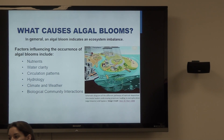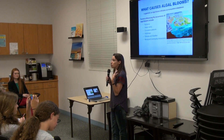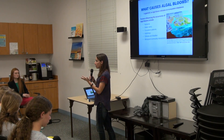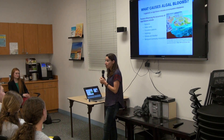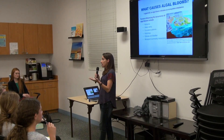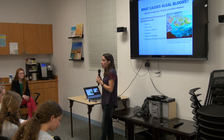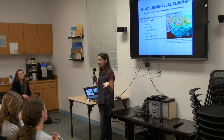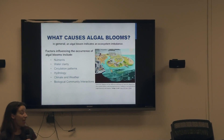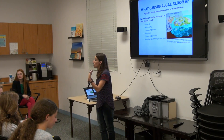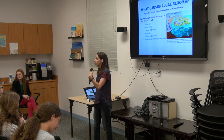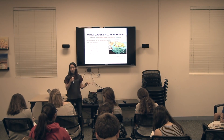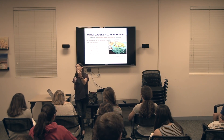So what causes algal blooms? Well, in general, it indicates that something's wrong with the system. If algae are plants, what do plants need to grow? Water, sunlight. These are aquatic plants, so they've got the water. What else? Fertilizer — they need nutrients, they need food. They also have interactions in the biological community. So because they're the basis of the food web, sometimes they get eaten. Whenever there are substantial shifts to any of these criteria, it can cause an algal bloom to occur.